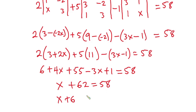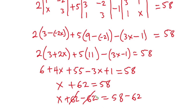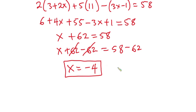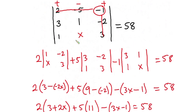Making x the subject: x plus 62 minus 62 equals 58 minus 62, so x equals negative 4. The value of x in this problem is negative 4. If you put negative 4 here, then the determinant of this matrix becomes 58. I hope you found this video useful — please give it a thumbs up and don't forget to subscribe. Thanks for watching, see you in the next video!